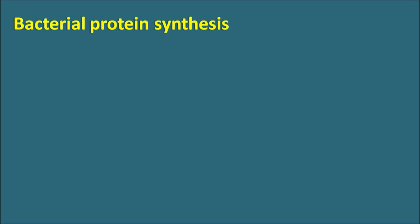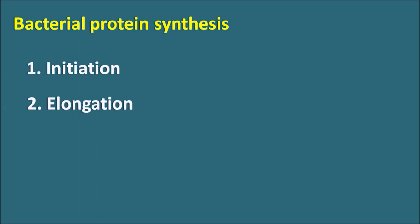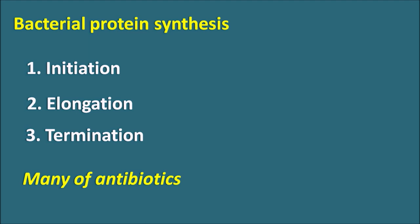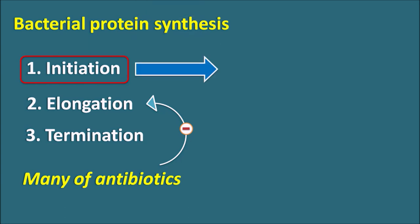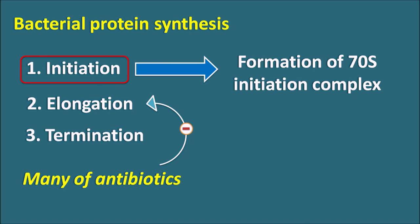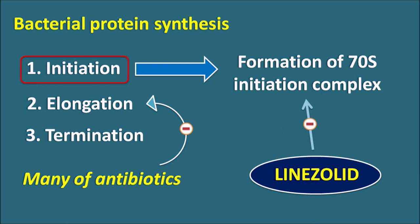Now let us see how Linezolid acts. Linezolid acts on bacterial protein synthesis, which involves three steps: initiation, elongation, and termination. Many antibiotics such as aminoglycosides, tetracyclines, and macrolides act on the elongation step. Very few drugs act on termination. Linezolid is the only drug that acts on the initiation step, blocking the formation of the 70S initiation complex from the 50S and 30S subunits.